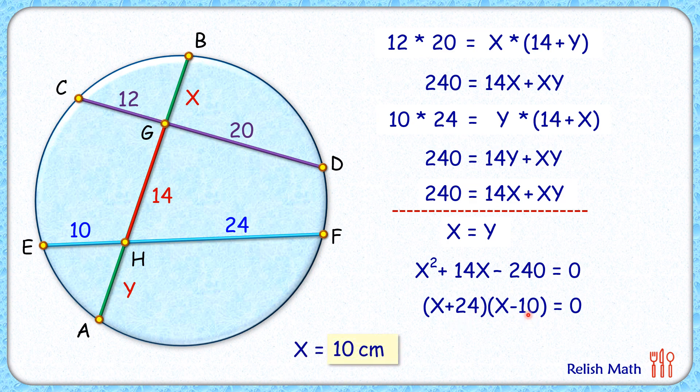Now here, x equals y, so y is also equals to 10. And full length AB will be 10 plus 14 plus 10, or AB length is 34 centimeters. And that's our answer.